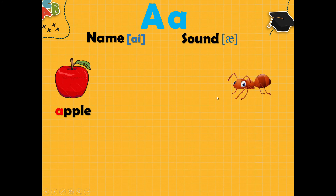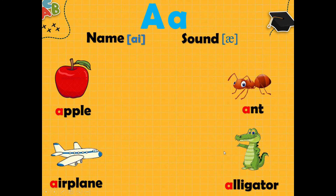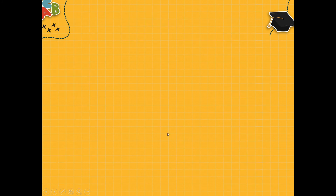Good. What is it? It is ant. A, ant. Good. What is it? It is airplane. Airplane. Good. What is it? It is alligator. Alligator. Good.